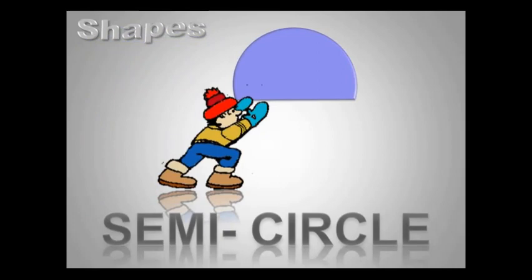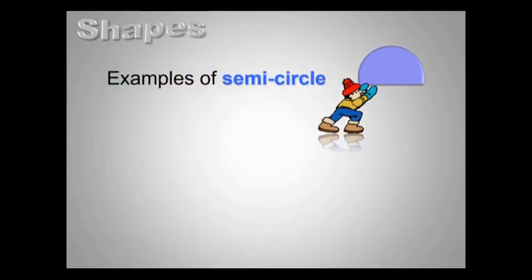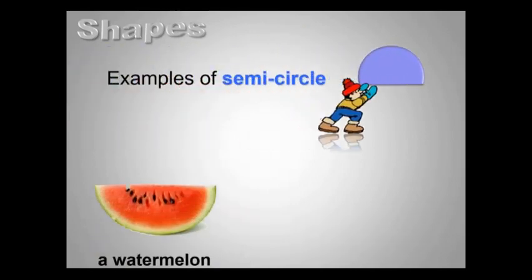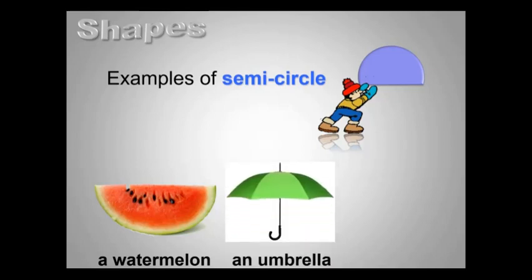This is a semicircle. A semicircle is half of a circle, which is why we call it a semicircle. A slice of watermelon, an umbrella, a bowl are all semicircle in shape.